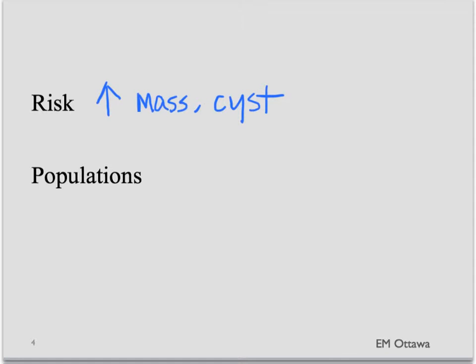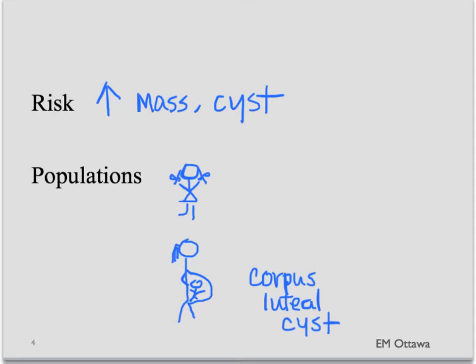In terms of population it is more commonly seen in young children due to anatomical abnormalities. It is also more likely seen in pregnancy. In pregnancy there can be an enlarged corpus luteal cyst, particularly in women who are undergoing fertility treatment.